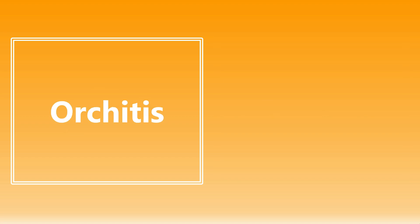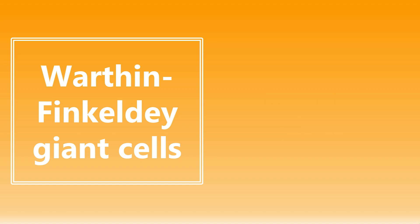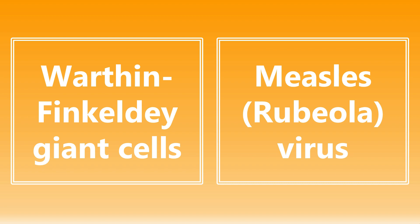Moving on: orchitis. The causative agent associated with that is mumps virus. If they are talking about it on the exam, they want you to make the association with mumps virus. Next, Warthin-Finkeldey giant cells — this is a tough one, but it is going to be associated with measles, or the rubeola virus. If you see that term, I want you to be thinking of measles, rubeola virus.